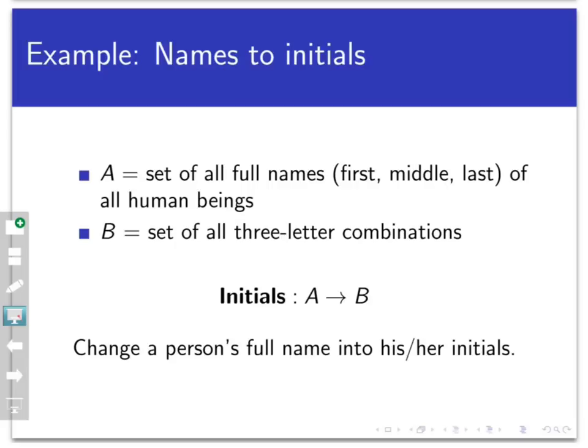And then we're going to let B be the set of all three letter combinations of the English alphabet like R, M, S. And we're going to define a process called initials. That is a process that takes things from A and turns them into things in B. It takes names and turns them into three letter combinations. You can probably by the name of the process tell what it's going to do. The process is I want to change a person's full name into their initials. So let's talk about the process here and see what we can do with it.